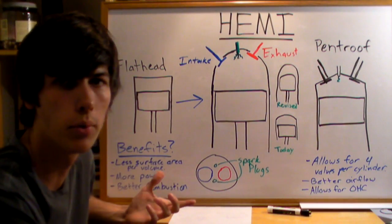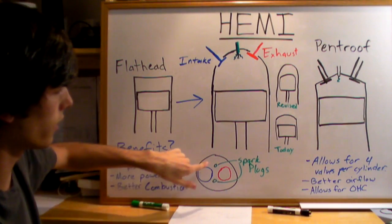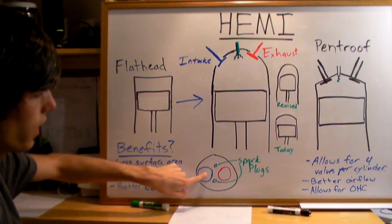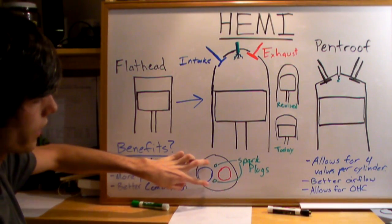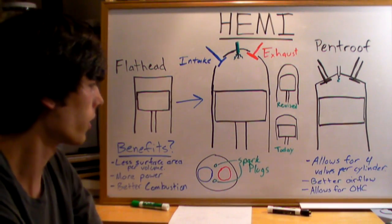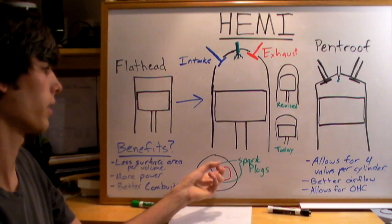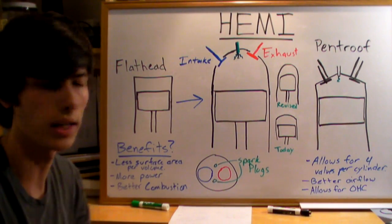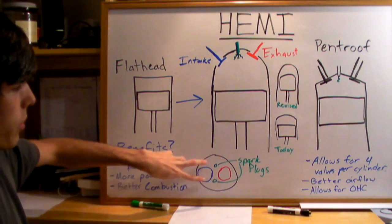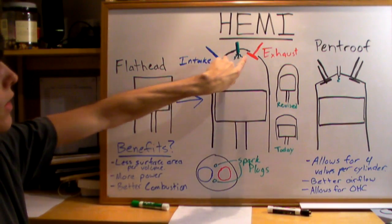The current Hemis, like the 5.7 Hemis that are in the SRT8s — if you're looking up at the cylinder head, it's going to look like this, where this is your intake valve, here's your exhaust valve, and they're going to have two spark plugs. Two spark plugs is pretty unusual for an engine, so you might be wondering why they would do that. The true story is that with one spark plug in the center, Chrysler engineers were having difficulty having the engine meet emission standards in the United States. So they had to put two spark plugs — one over here and one over here, front to back.